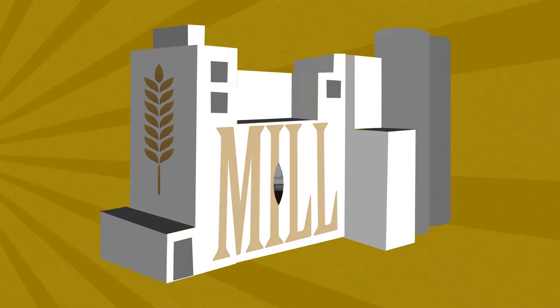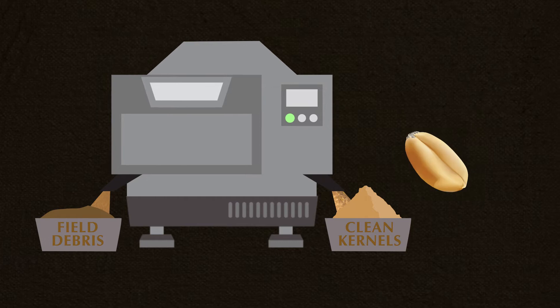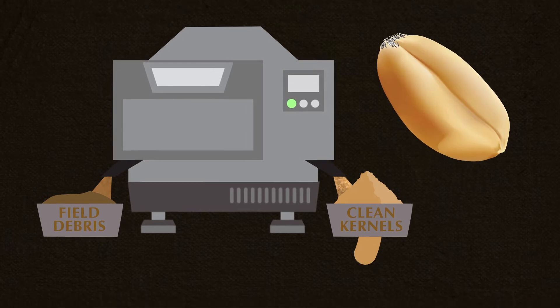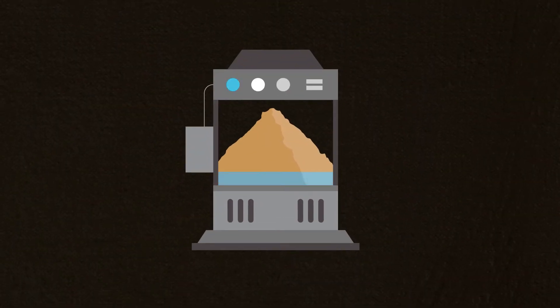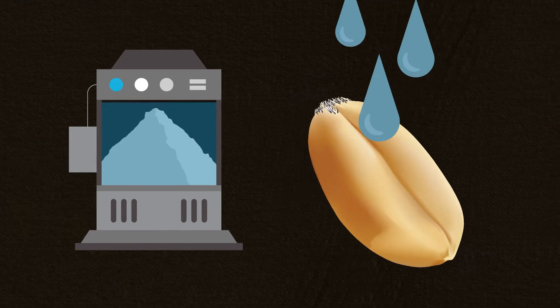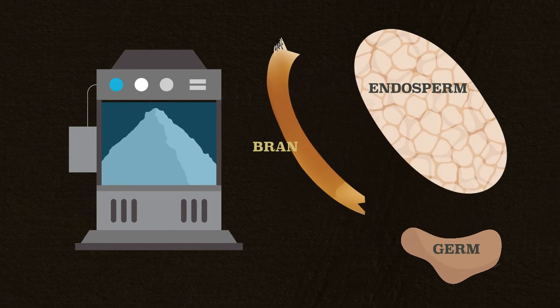After arriving at the mill, the wheat is cleaned and purified, leaving the kernels free of unwanted field debris. A tempering process happens next. By adding moisture, different parts of the kernels separate more easily.